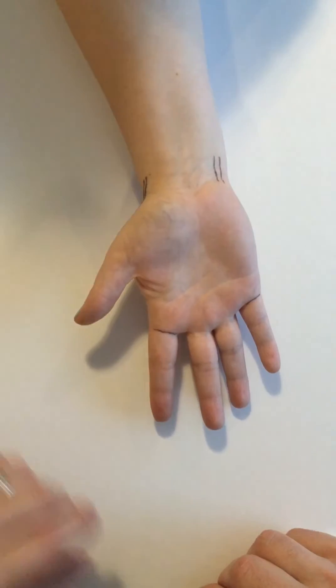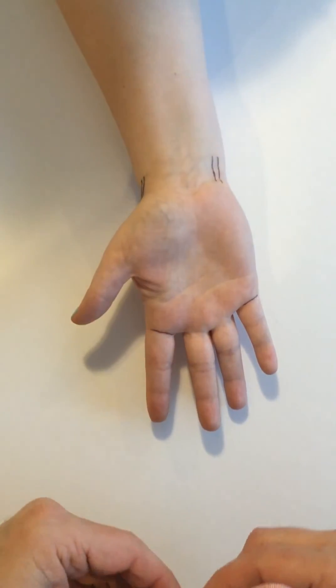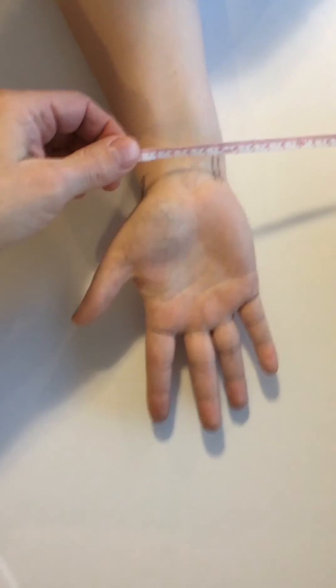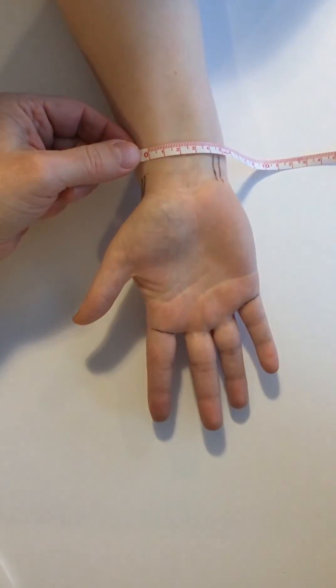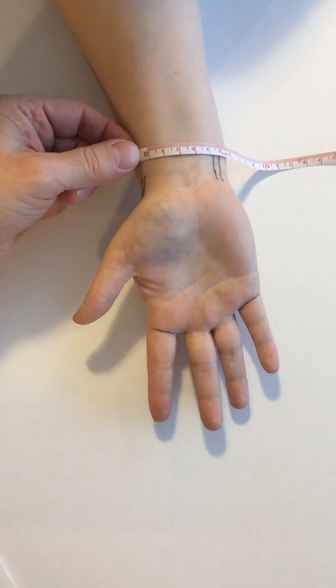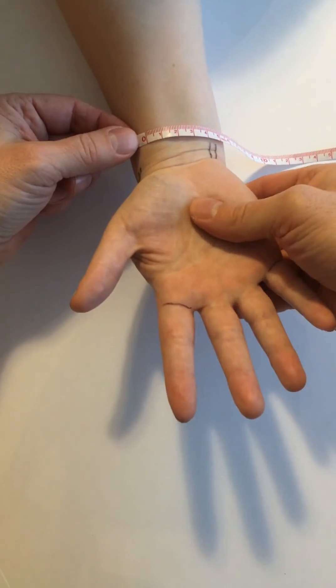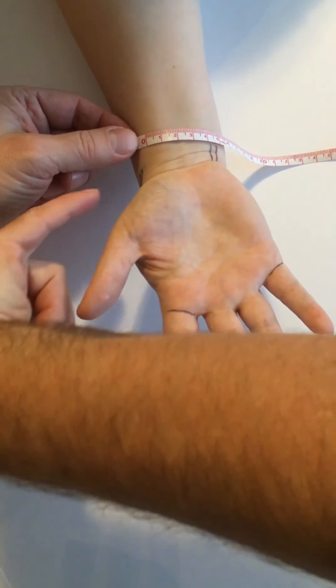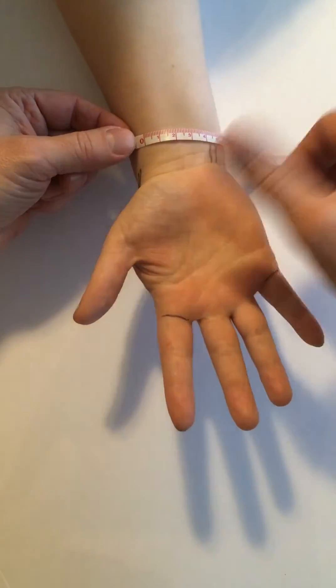So what we'll do here is we're going to start at the radial volar aspect of the wrist with our measuring tape and we want to align the distal edge of the measuring tape with the distal wrist crease. The distal wrist crease is defined as the wrist crease that crosses both abductor pollicis longus and flexor carpi ulnaris.